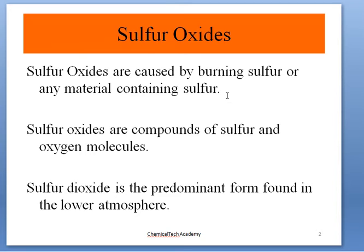If you have any material with sulfur content — whether less than 1%, 1%, or more — and you burn, combust, or oxidize it, that means a reaction between that material and oxygen occurs. We will produce sulfur oxides, which are compounds of sulfur and oxygen. There are two major sulfur oxides: SO2, called sulfur dioxide, and SO3, called sulfur trioxide. SO2 is the predominant form found in the lower atmosphere.